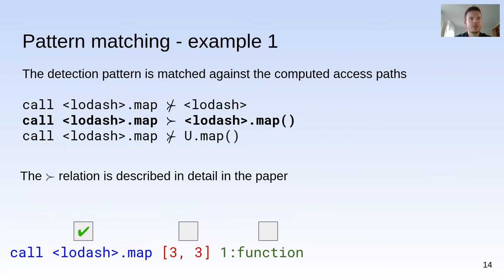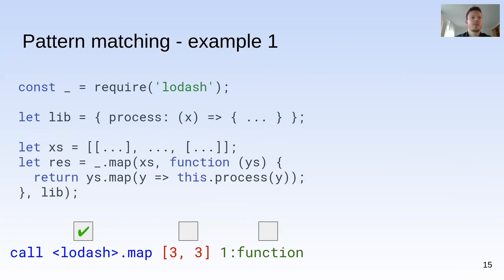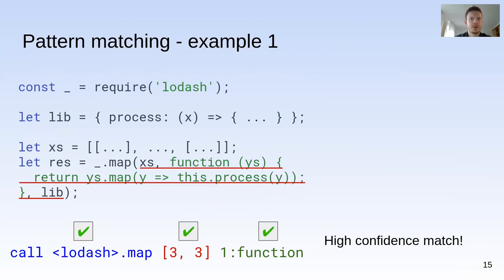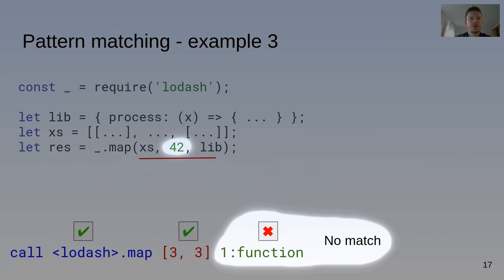However, the lodash detection pattern also includes constraints on the arguments of the call to map — we refer to these as call filters. Tapir determines whether they are satisfied by examining the source code. The map function is called with exactly three arguments, so Tapir marks the first call filter as satisfied. It is also clear that the second argument is a function, so the second call filter is also satisfied, and the match is marked as high confidence. If instead the second argument is retrieved from some complicated computation and Tapir cannot infer its type, the match is marked as low confidence. If the second argument is some value where Tapir is certain it is not a function, no match is produced.